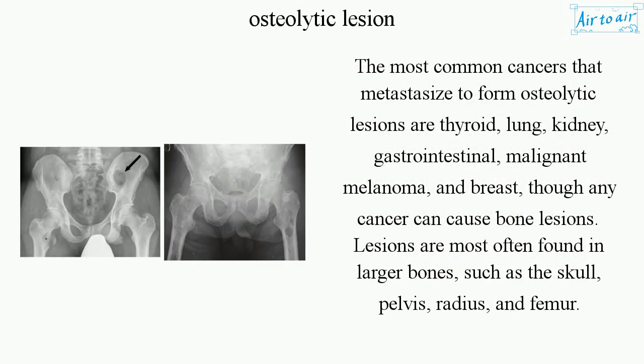The most common cancers that metastasize to form osteolytic lesions are thyroid, lung, kidney, gastrointestinal, malignant melanoma, and breast, though any cancer can cause bone lesions. Lesions are most often found in larger bones, such as the skull, pelvis, radius, and femur.